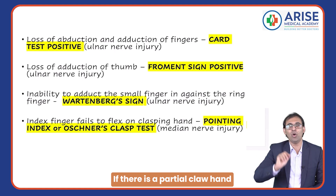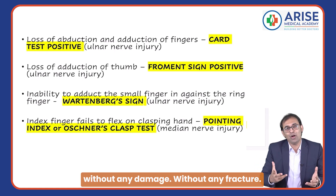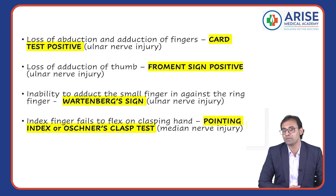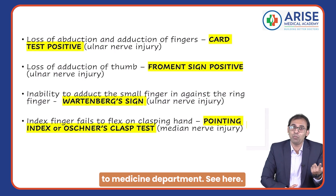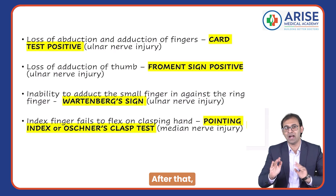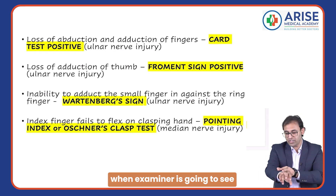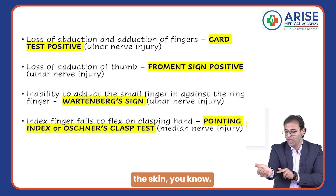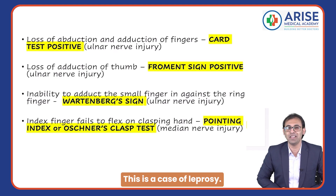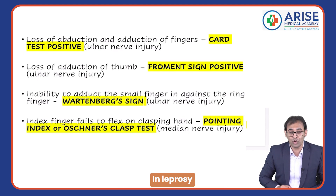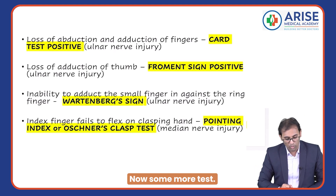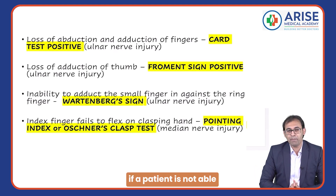If there is a partial claw hand without any fracture or history of trauma, which disease do you suspect? When the patient comes to the medicine department with no history of trauma, and on examining the skin you also see white spots — this is a case of leprosy. In leprosy you will also see a partial claw hand.